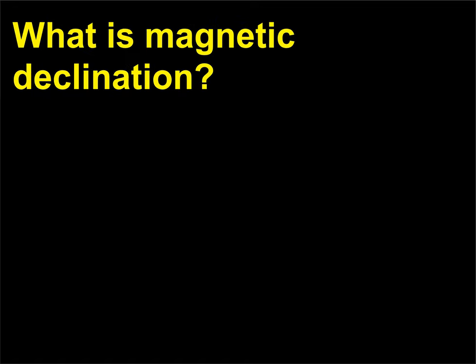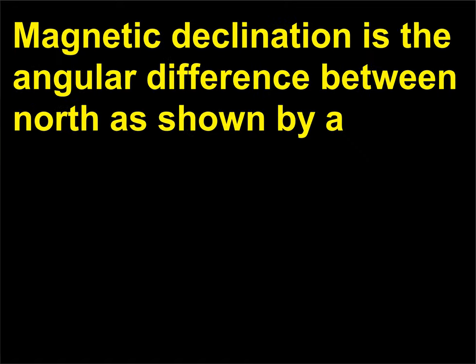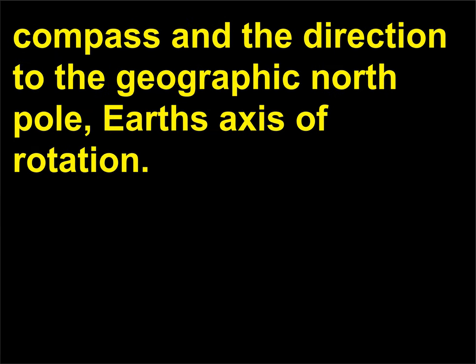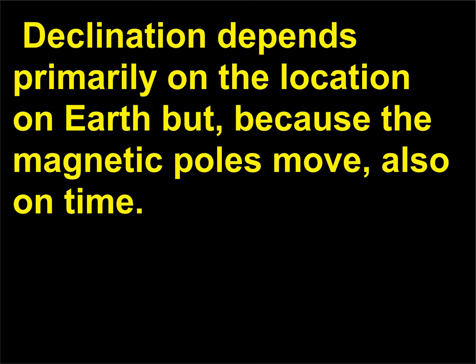What is magnetic declination? Magnetic declination is the angular difference between north as shown by a compass and the direction to the geographic north pole — Earth's axis of rotation. Declination depends primarily on the location on Earth but, because the magnetic poles move, also on time.